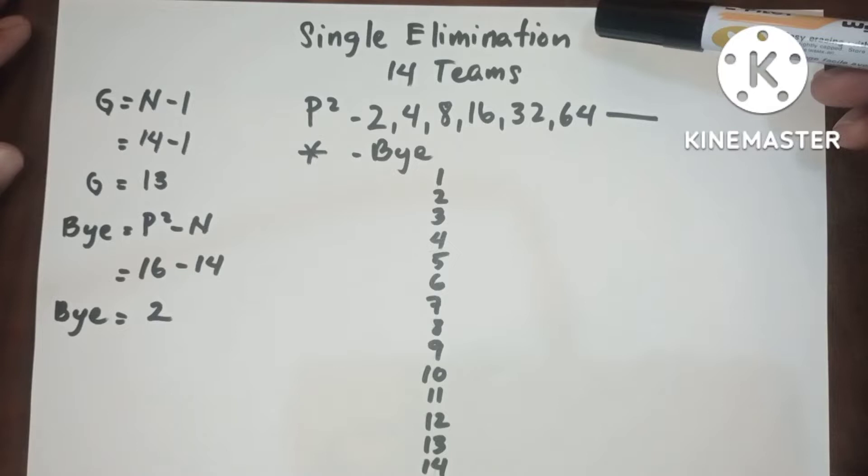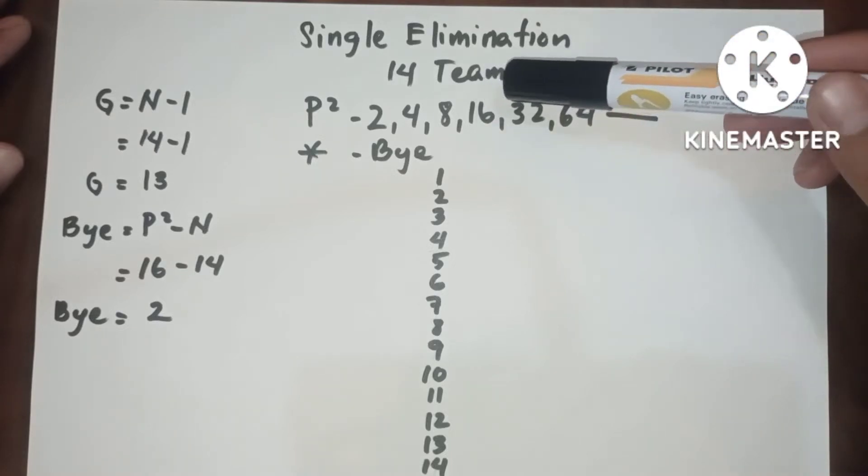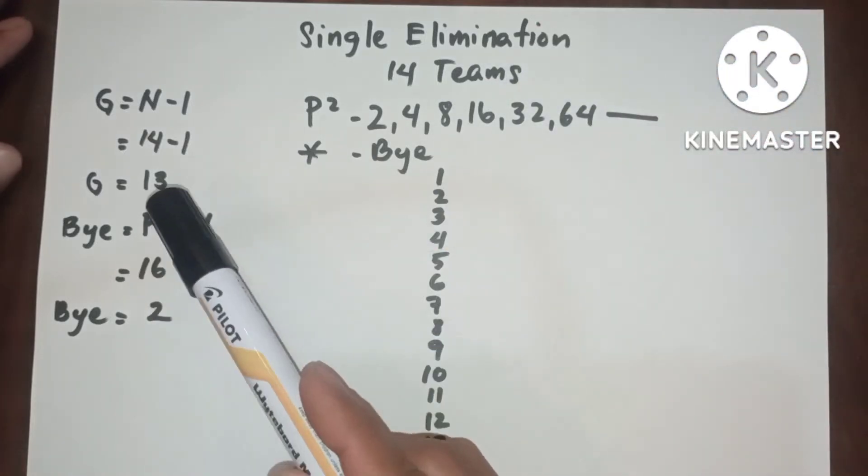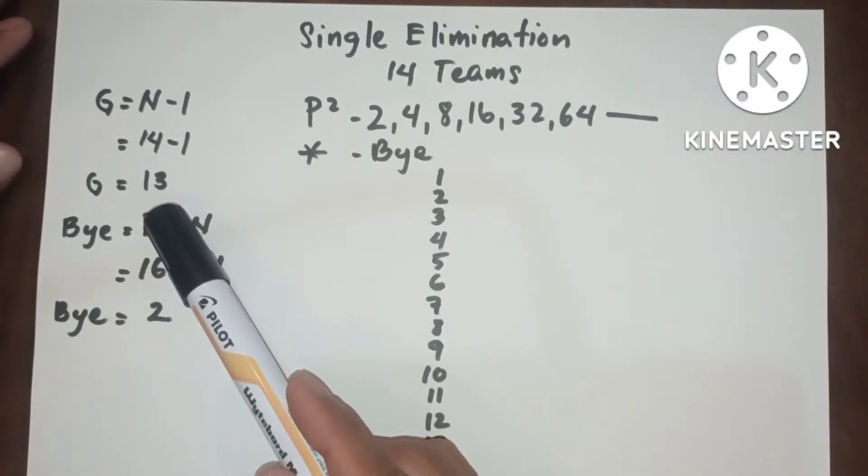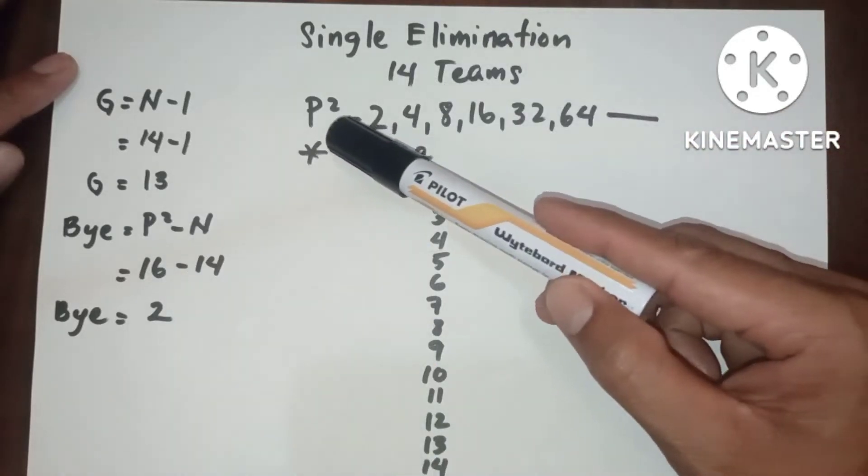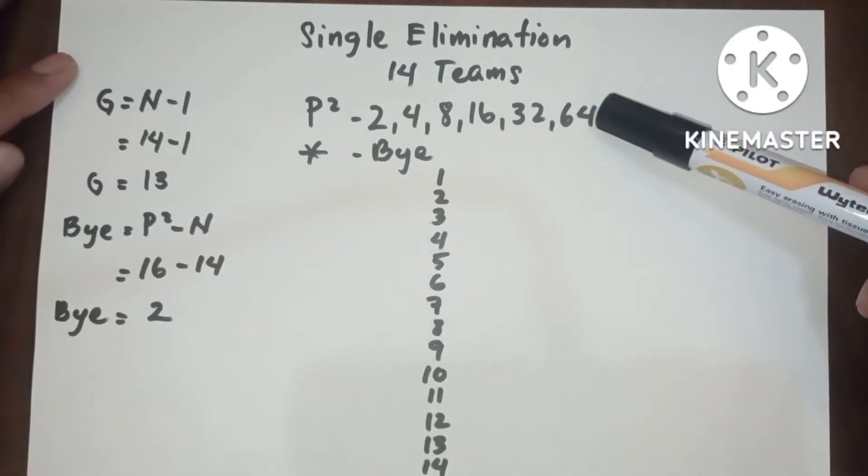Hello everyone, this is single elimination with 14 teams or 14 number of entries. In 14 teams we have 13 games. Since 14 is not included in the power of twos, meaning it has bye, we need to determine the bye.